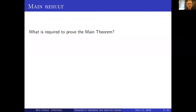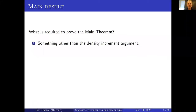So what are you going to have to do to prove that main theorem? From the discussion so far, first of all you'd have to do something other than the density increment argument, because that argument — used in all of the previous works — even on GRH won't get you such a power saving.